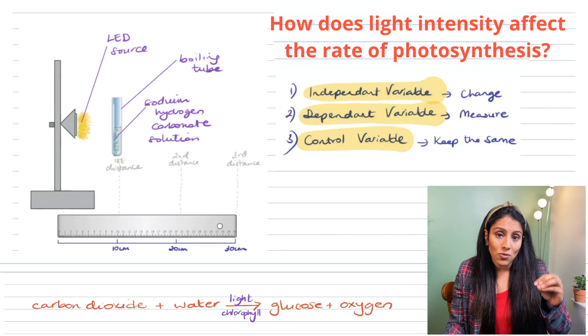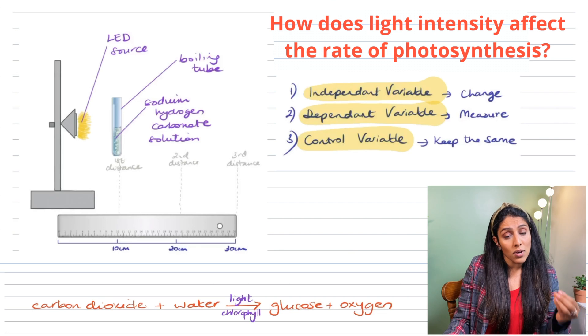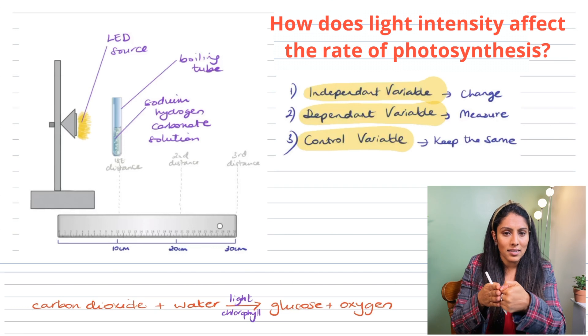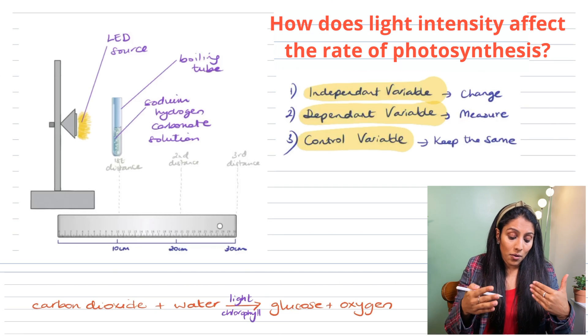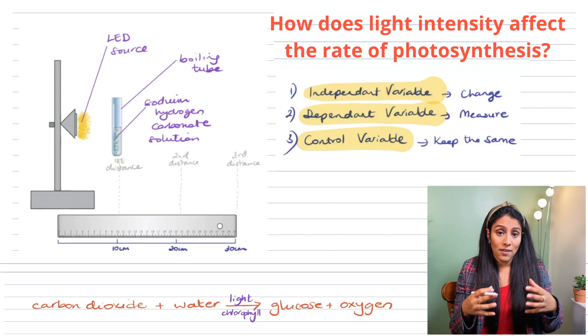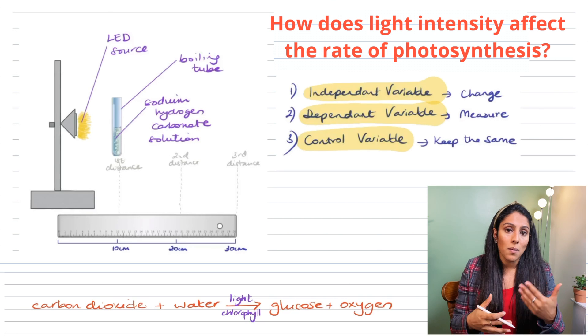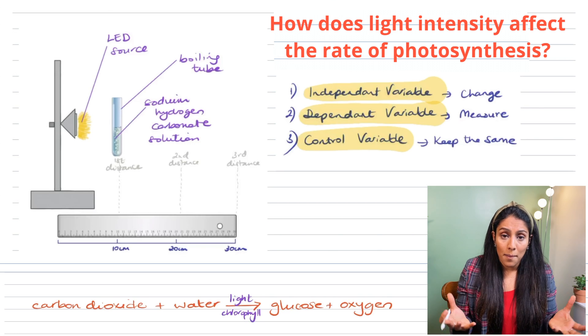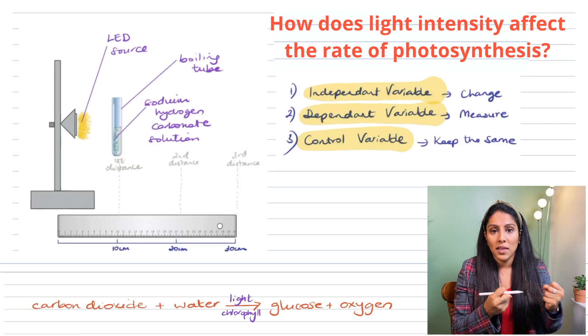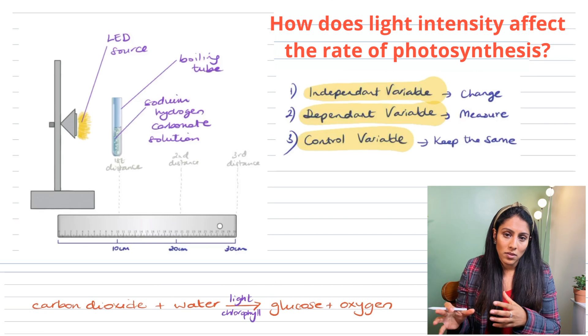Now the LED source of light is really good because it allows very little heat to affect the experiment. So if you don't have an LED light and you have a normal light you'll have to have some form of a shield or a beaker of water to absorb that heat so that doesn't tamper with the experiment.